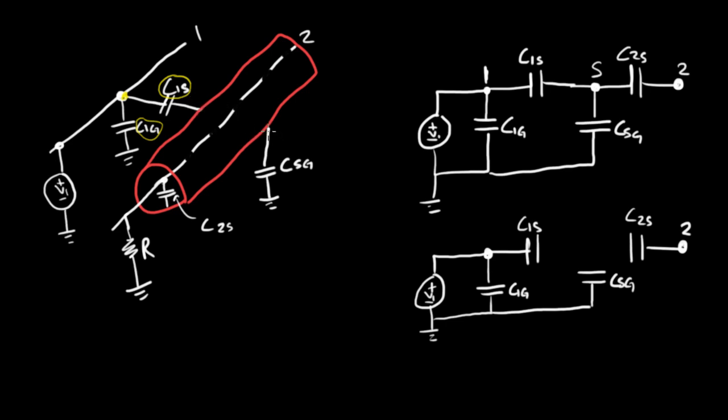There is a capacitance between the shield of circuit two and ground, C sub SG. And finally, there's this capacitance between wire two and the shield, C sub 2S. So let's redraw it over here. C sub 1G shows up here, C sub 1S is here, C sub 2S is here, and C sub SG is here.